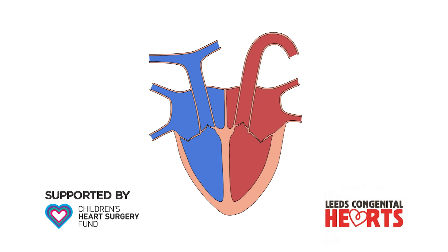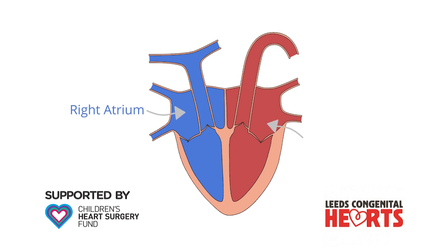The function of the heart is to pump blood to both the lungs and the body. The heart has two sides: the right side, shown in blue, and the left side, shown in red. It also has four chambers. The atria, one on the right and one on the left, receive blood into the heart.